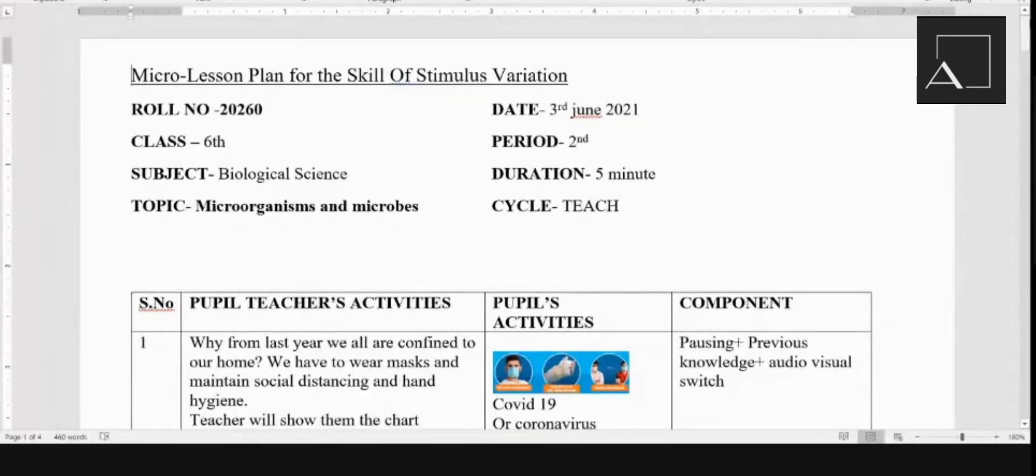Good afternoon. Today I am going to give a micro lesson plan for the skill of stimulus variation. This is my chalkboard entry where I have given my roll number, the class I am going to teach, my subject and topic, date, period, duration is five minutes, and cycle is teach.